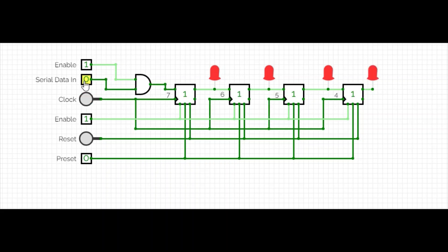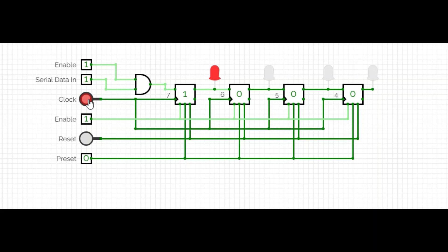Let's do it again so you can better understand. At four clocks the LED is glowing. Now let's make data in zero. Applying the clock: first LED is not glowing, second LED is not glowing, third LED is not glowing, and fourth is not glowing. Then let's make it one again: first LED, second LED, third LED, and fourth LED glowing.